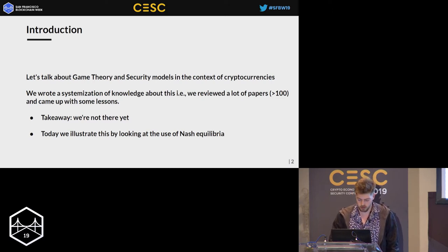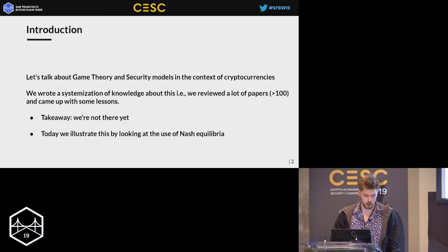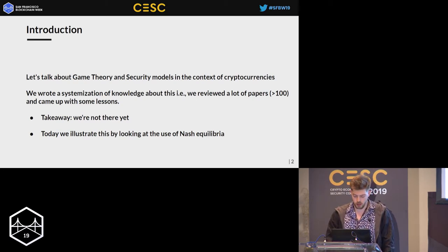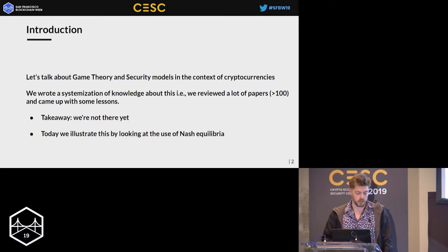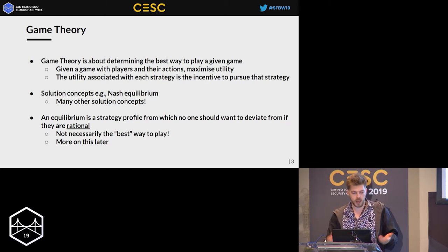That's a good thing because it means there are things to draw on and we shouldn't try to reinvent the wheel too much. But there are also some bad habits in current research around cryptocurrencies. For example, a lot of people are proving things around Nash equilibrium — which everyone has heard of and sounds marketable — but it isn't actually very useful in practice, which is what we're going to see. Game theory, briefly, is about having a game with incentives and figuring out the best way to play it.